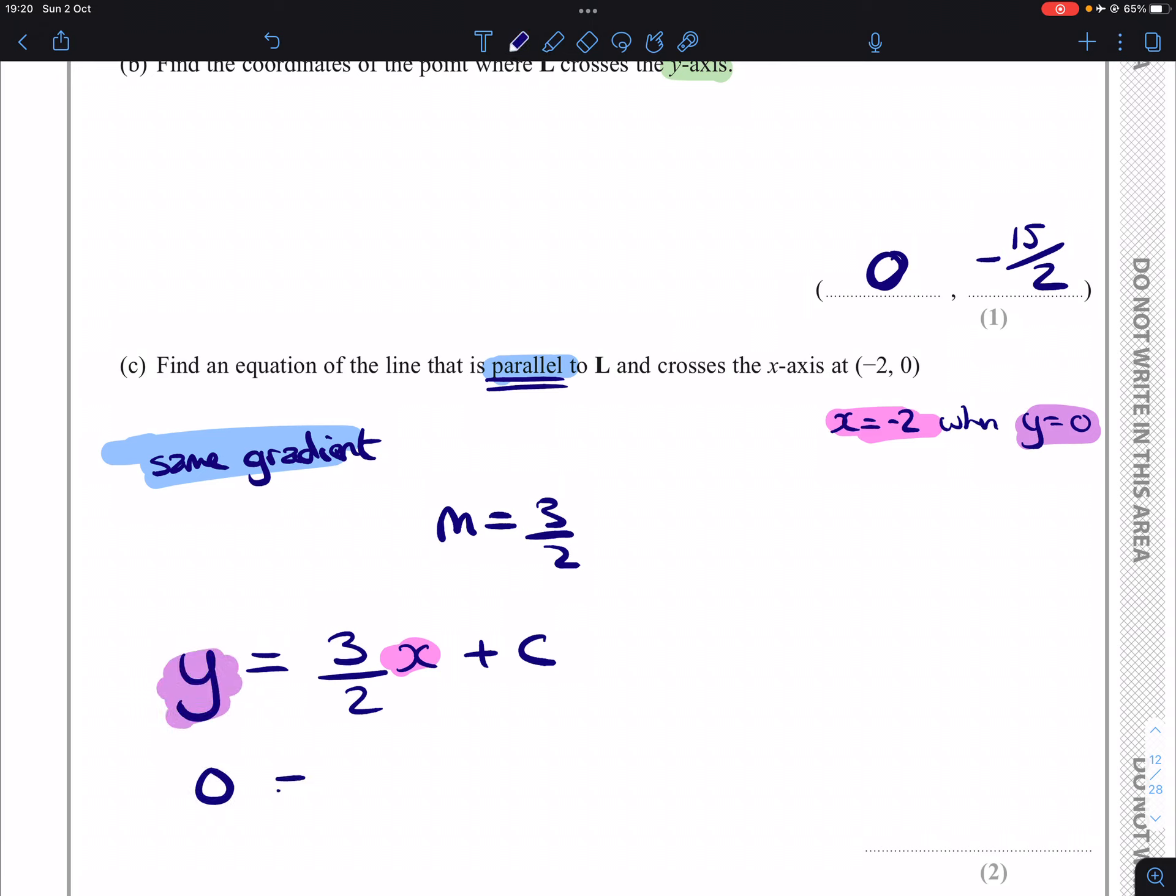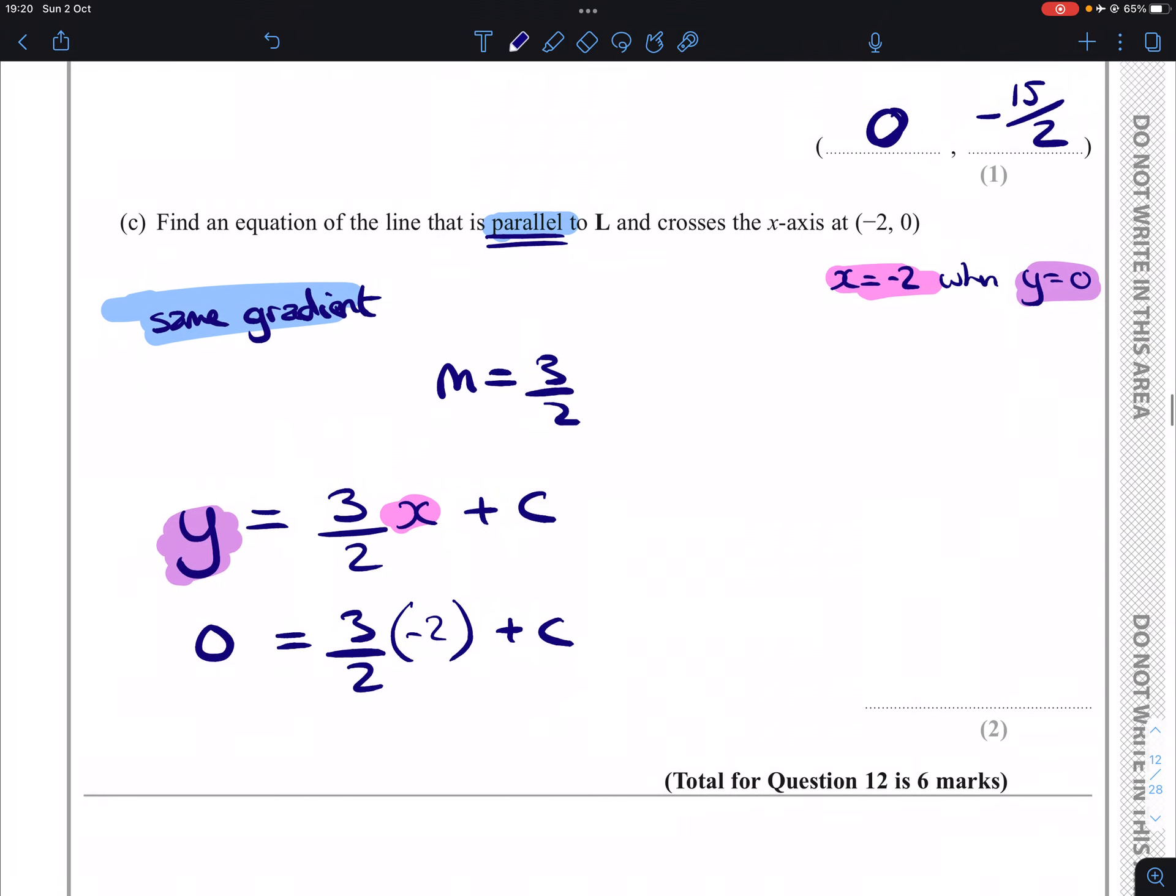So I sub in 0, I sub in -2, and I solve this equation for c, which is going to give us 0 = -3 + c, which gives us 3 as c. And then what I do is I update our original equation to give us y = 3/2x + 3. Done.